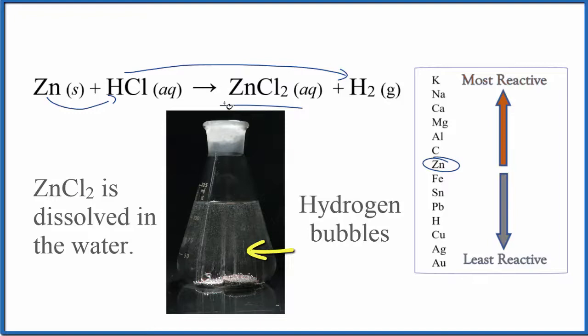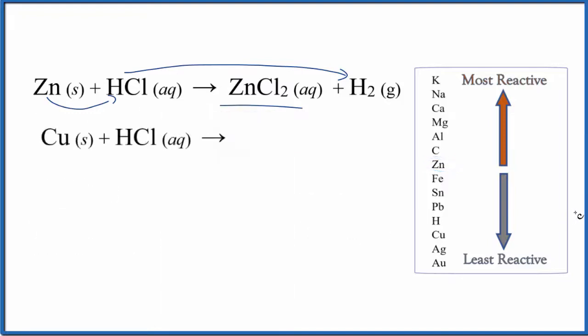But what about copper in hydrochloric acid? So we find copper and hydrogen. Here's copper right above it, hydrogen. So copper is less reactive than hydrogen. That means the copper can't push the hydrogen out. It's less reactive, so we have no reaction.